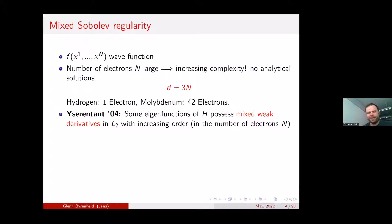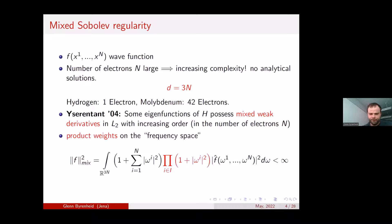As we know from approximation theory, regularity is always important for nice approximation. Isérentant proved in several works that eigenfunctions for the negative spectrum of this electronic Schrödinger equation fulfill a so-called mixed weak derivative property: if we square the Fourier transform of our wave function, we can put a product (tensor) weight in front of it, plus an isotropic weight, and the integral over all of this in L² is finite — meaning we have a bounded mixed derivative.